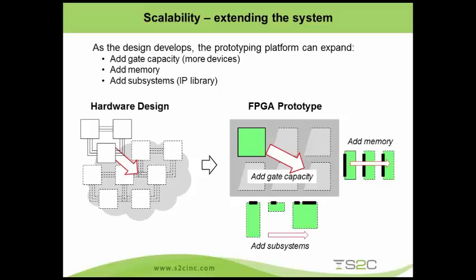What do I mean by scale? As you can see on the chart, when your design grows, you need to be able to add more FPGAs and more logic gates. When you need to add more memory — whether DDR, DDR2, DDR3, or SRAM — you need to have the ability to add different memory types. And also subsystems: many times your design today may be using USB 2.0, and tomorrow USB 3.0, different PCIe, MIPI, and so on. Having the ability to add or change subsystems is very, very important.